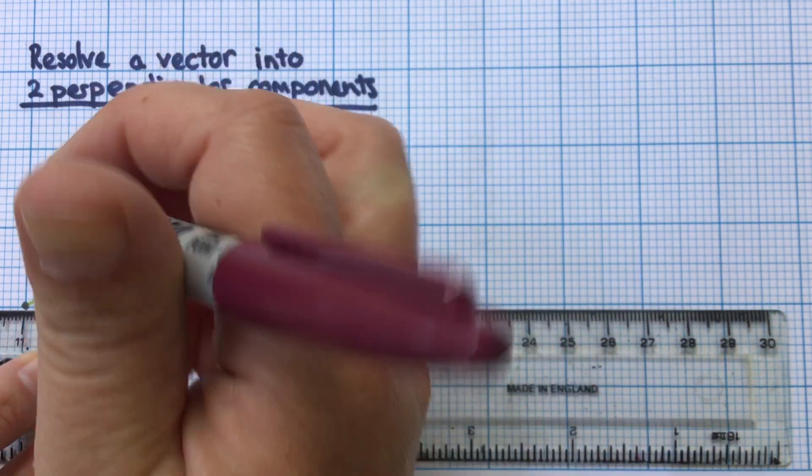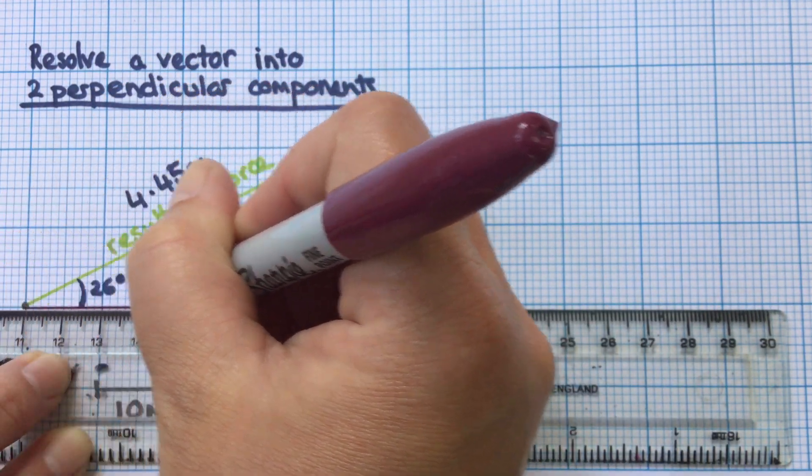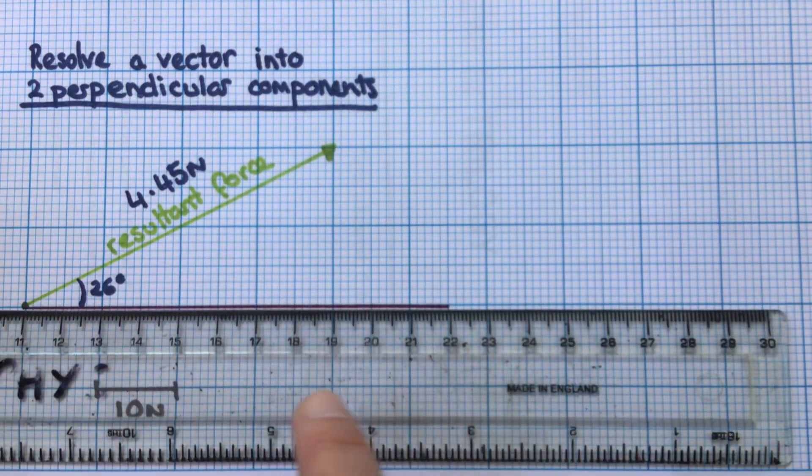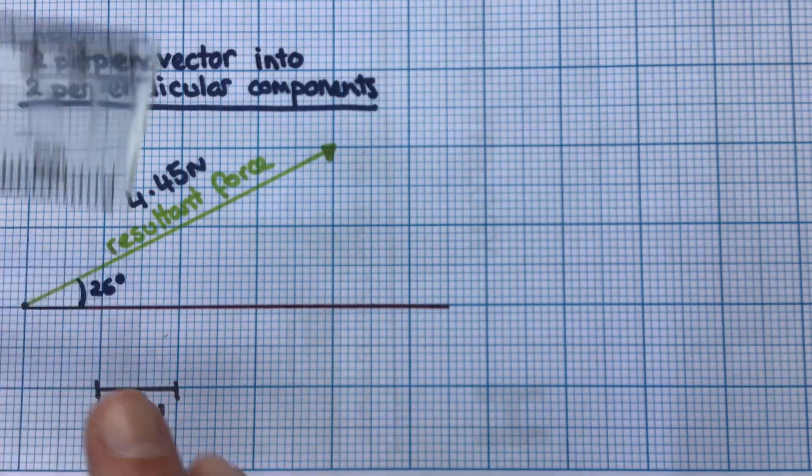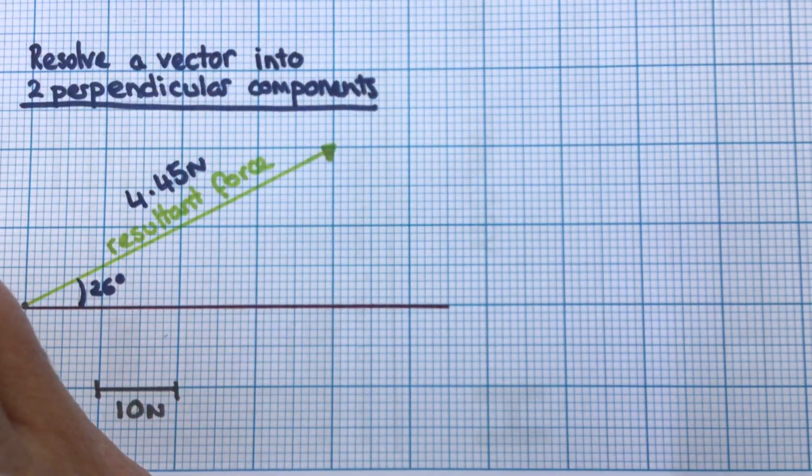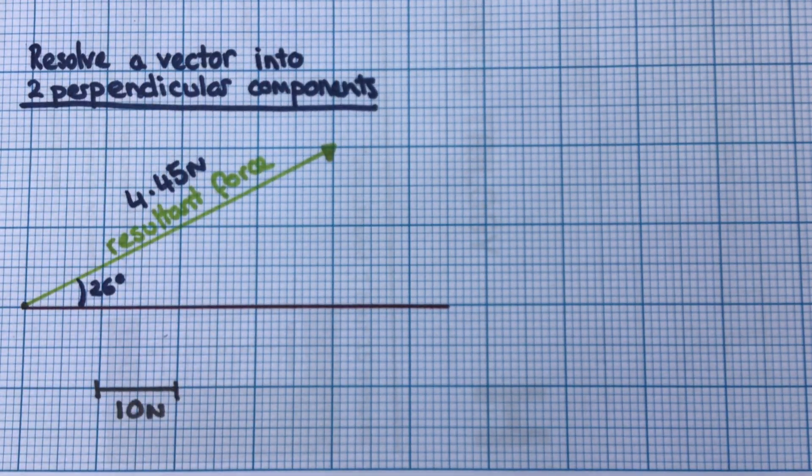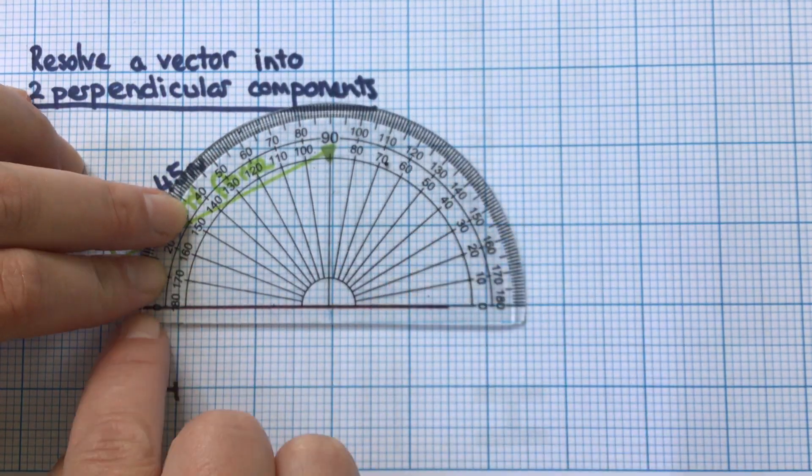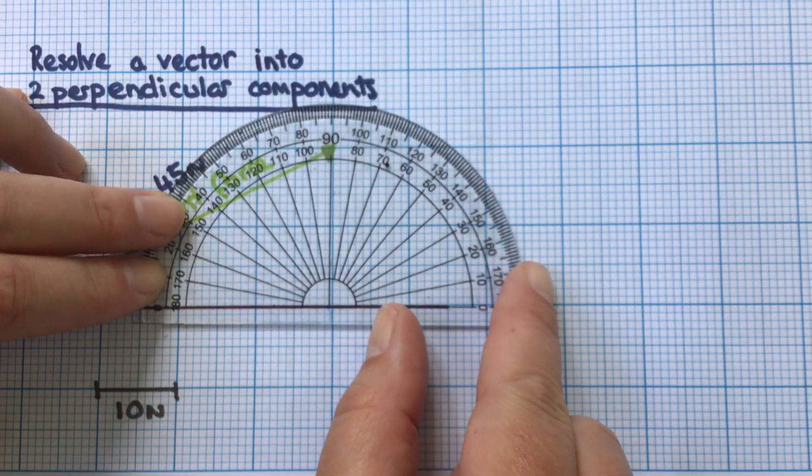I've drawn my horizontal line in here, and then I'm going to get my protractor and find this baseline up here.